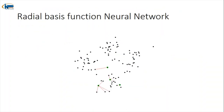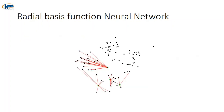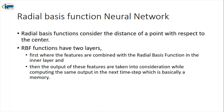The twenty-fifth algorithm is RBF — Radial Basis Function Neural Network. RBF considers the distance of each point with respect to the center, as shown in the diagram. It has two layers: the first layer combines features with the RBF function, and the output of those features is preserved and used in the next computation.